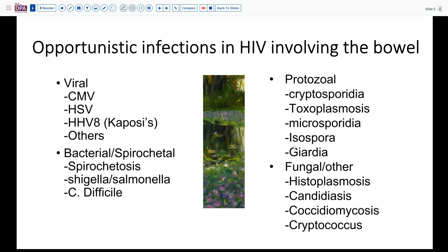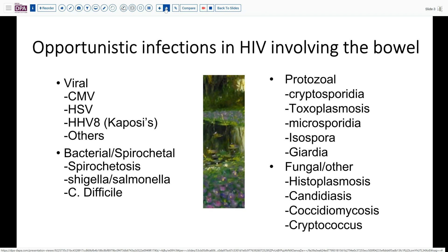Fungal disorders are typically not the most common things in these situations but can present. Thinking of things usually seen in other locations — like histoplasmosis, candidiasis in the upper tract and rarely the lower tract, coccidiomycosis, and cryptococcus — these also need to be considered. In a patient with this history, a routine acid-fast stain, some screening, antiviral immunoperoxidase, as well as a GMS stain should be de rigueur in evaluation of these lesions.